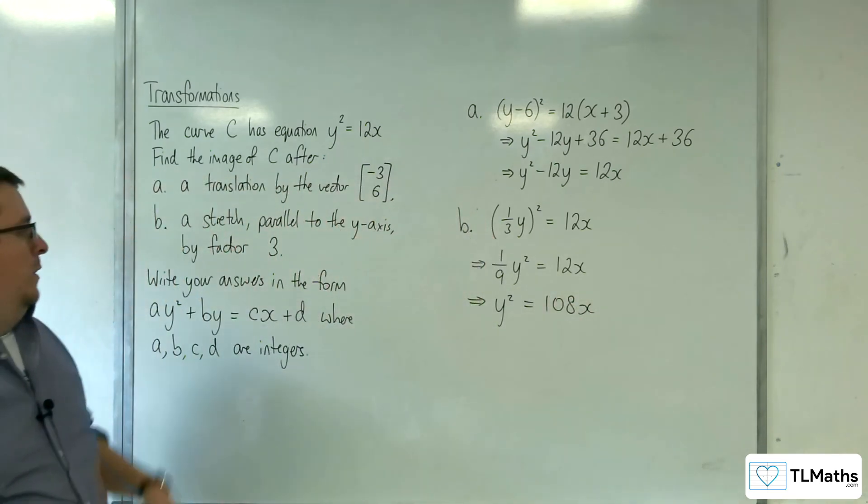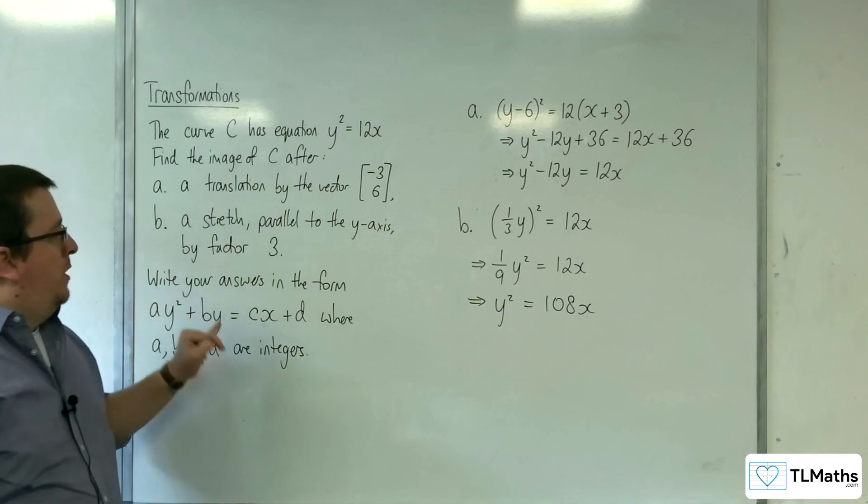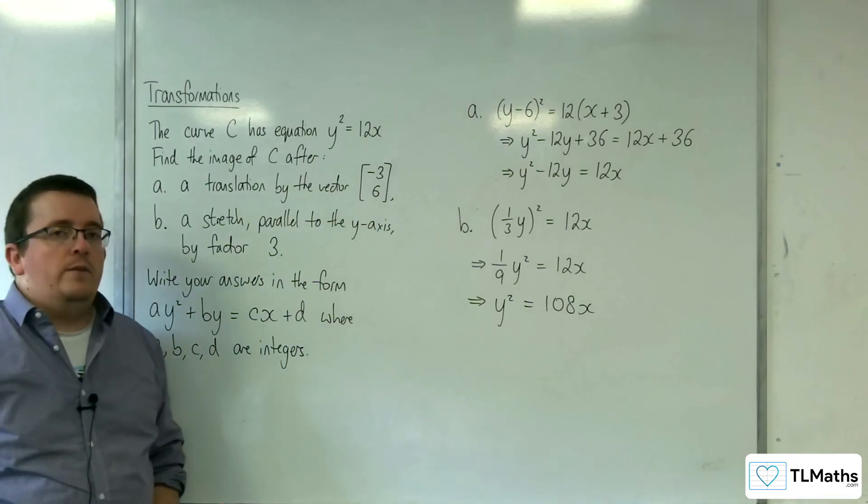We get y² = 108x. So a = 1, b = 0, c = 108, d = 0. These are our transformed curves.